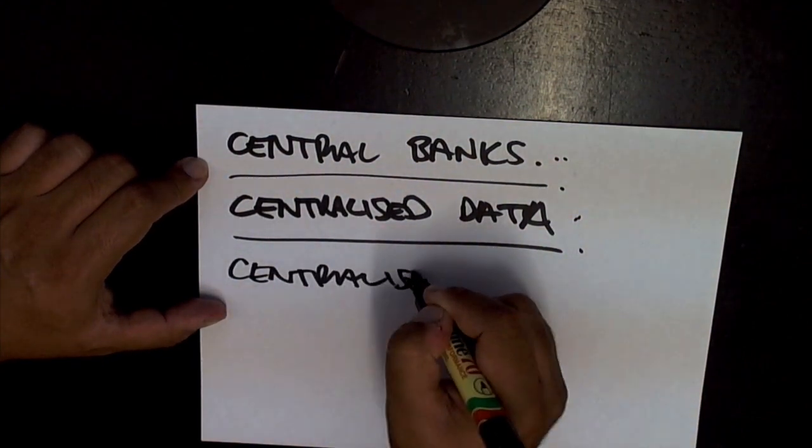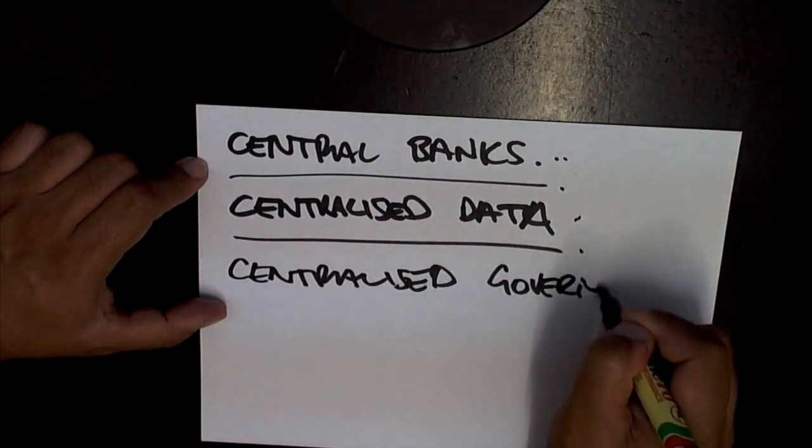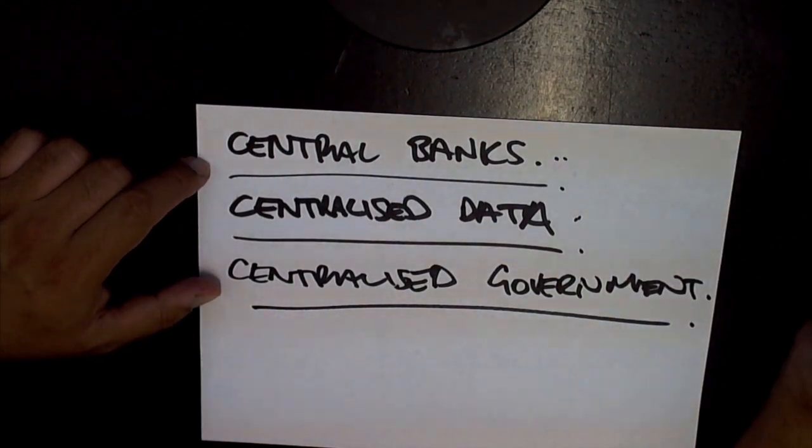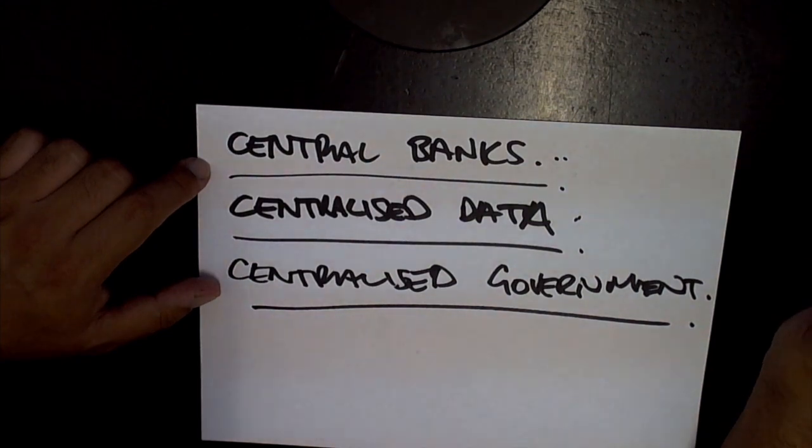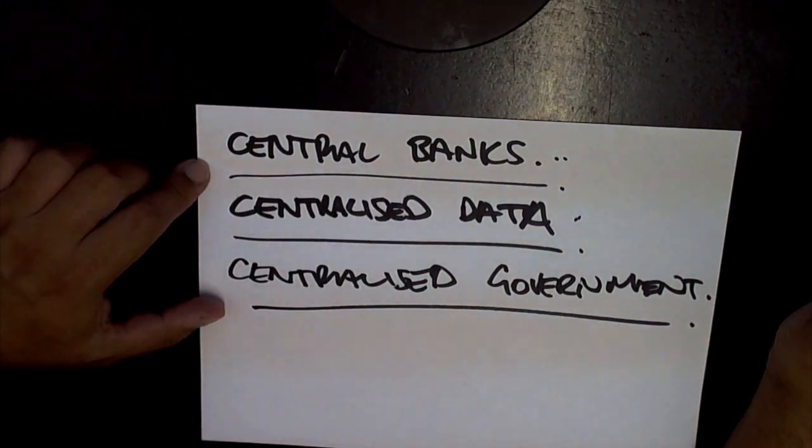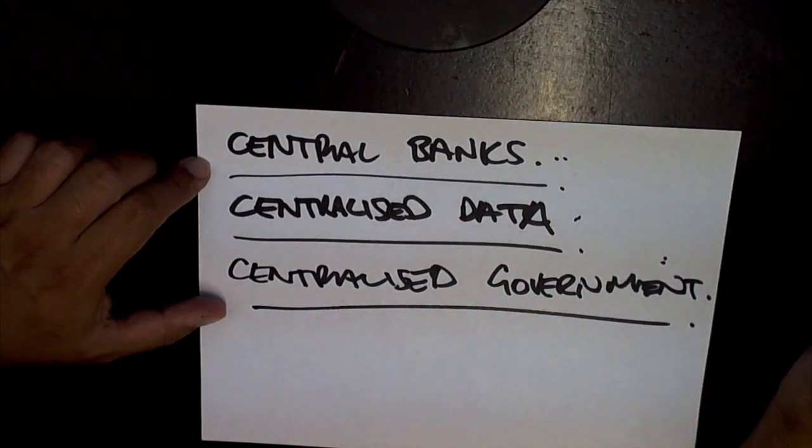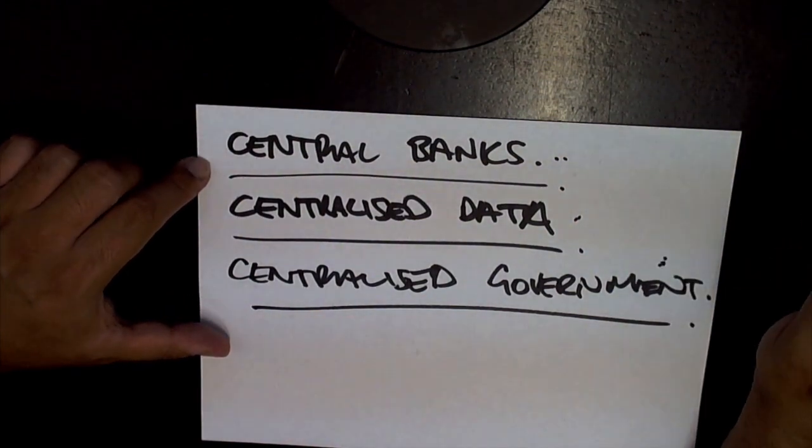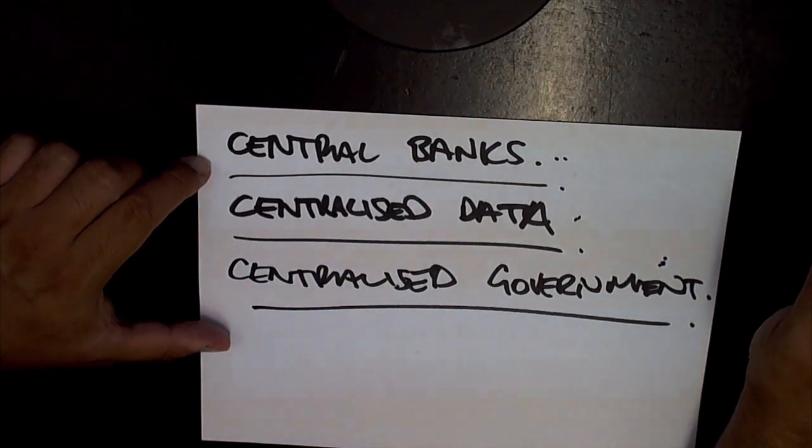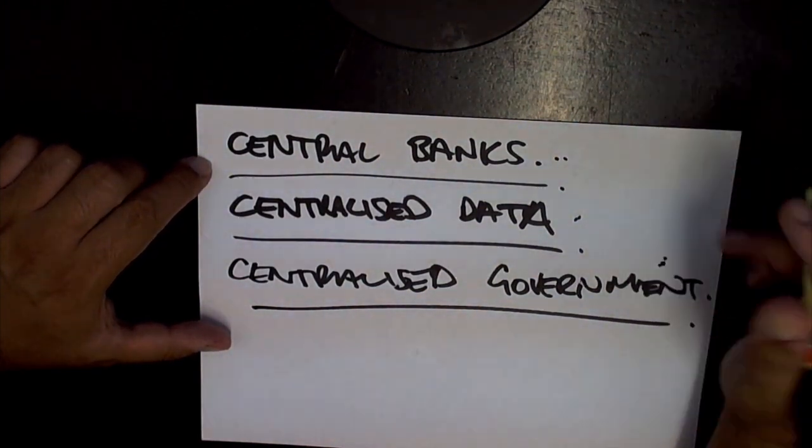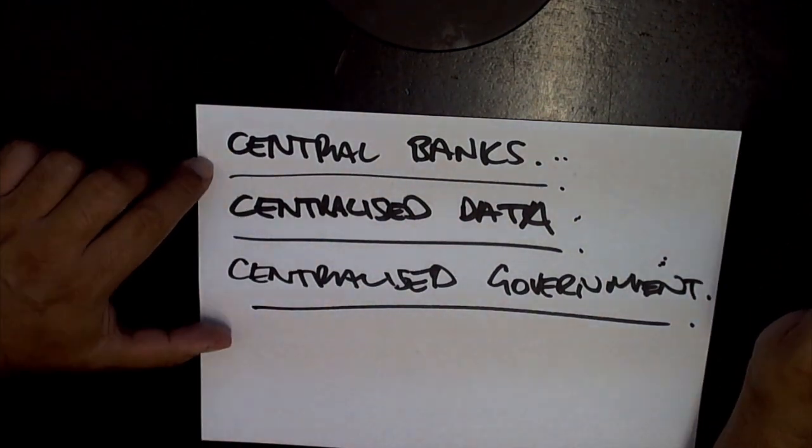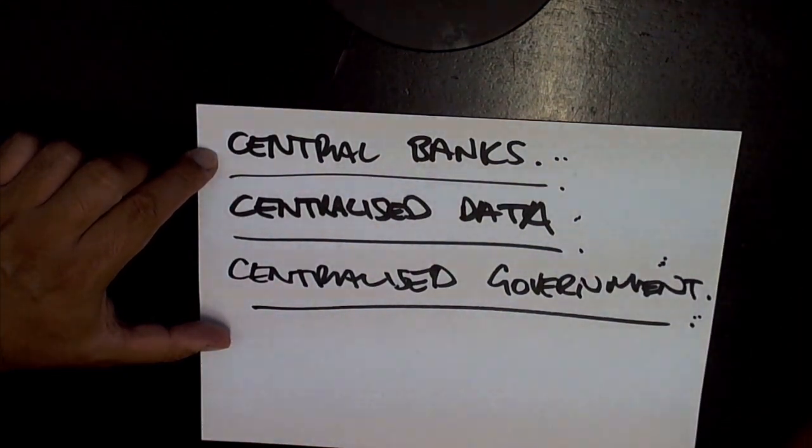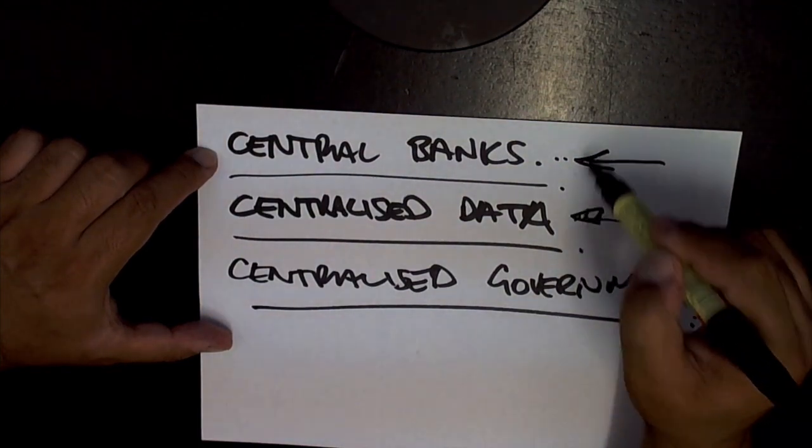People want control of their own data, and there's also centralized government. Anything centralized tends to be inefficient, and that includes government. Decentralizing government is something that can be helped with distributed ledger technology, but this one is probably a subject for another video because this can't be done just online - it has to be done in the real world. DLT will just augment as an auxiliary to those actions that happen in the real world.